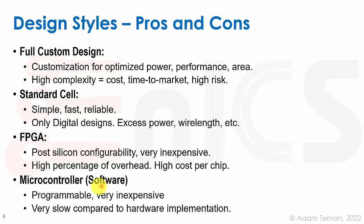Writing software means coding in a high-level language like C, compiling to assembler, and running on a microcontroller or accelerators. It's a sequential process — slower, higher power, and less efficient than hardware for complex tasks. However, software offers high-level programmability, is relatively easy to debug, and can be updated in seconds with a debugger. If you know what you want to do, want to do it at scale, and want efficiency, you make the hardware — which is what this course is about.